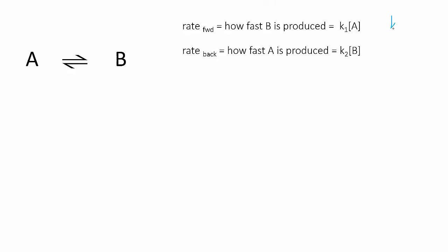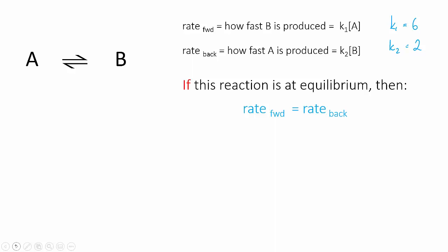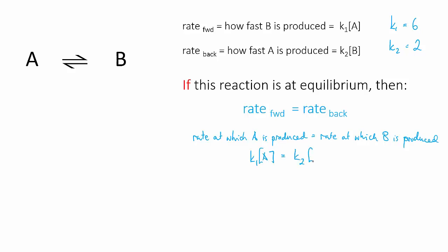Let's say we know the values of our rate constants: K1 equals 6 and K2 equals 2. As long as we keep the temperature constant, those rate constants won't change. So if this reaction is at equilibrium, the forward rate equals the reverse rate, meaning K1·[A] = K2·[B], which gives us 6·[A] = 2·[B]. If the concentration of A and B were equal, the forward reaction would be faster than the reverse — so it's not at equilibrium.